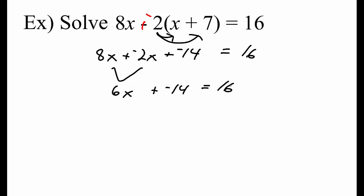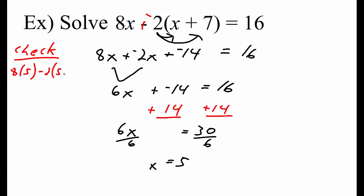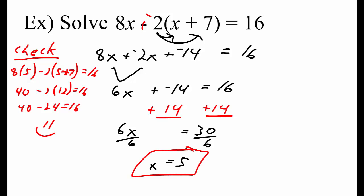We're going to change that to plus negative 4. We can add positive 14. And we get x equals 5. 40 minus 24 does equal 16, so x equals 5.